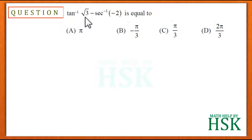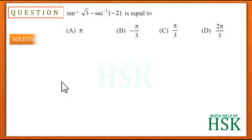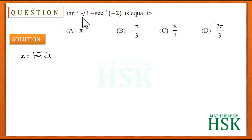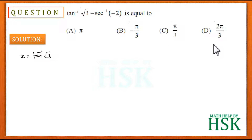The question is an objective question and it says that tan⁻¹(√3) minus sec⁻¹(-2) is equal to which of the options A, B, C, or D? To solve this question, I will calculate the principal value of tan⁻¹(√3) and sec⁻¹(-2) separately and then combine them.